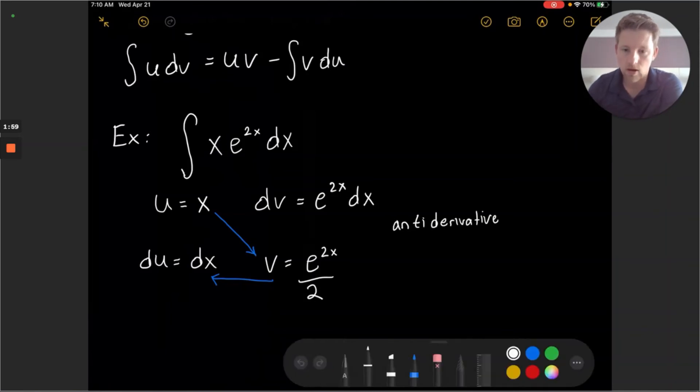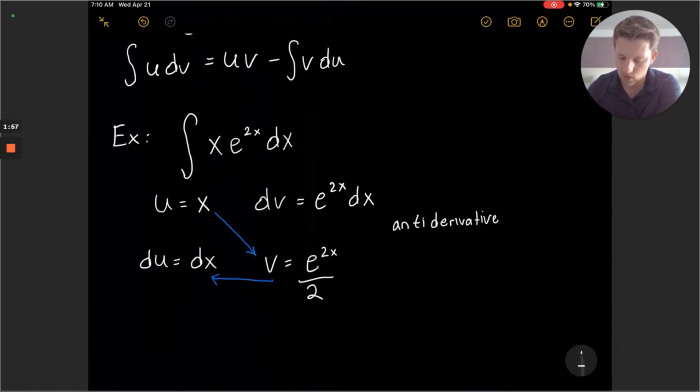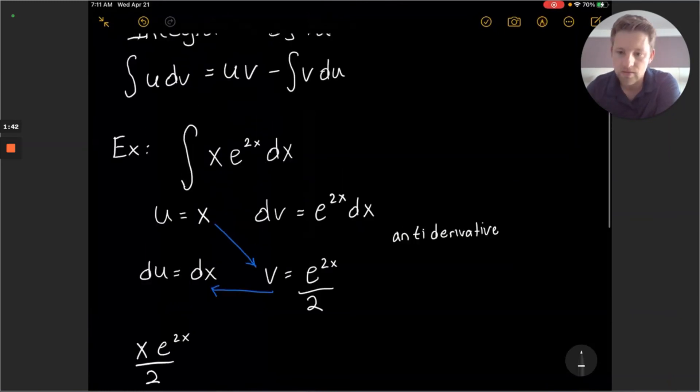So let's consider our integral that will be left. I'll do the product of v and u. So that will be x times e to the 2x over 2. So that's my u v product.